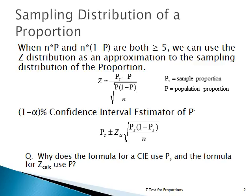All we need to know at this point is that when N, the sample size, times P, the population proportion, and the complement N times 1 minus P — as long as they're both greater than or equal to 5 — then the Z distribution is a very good approximation to the sampling distribution of the proportion.